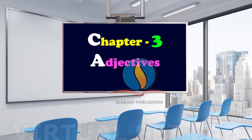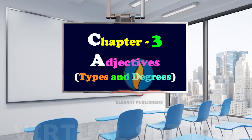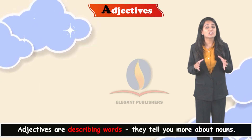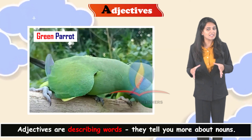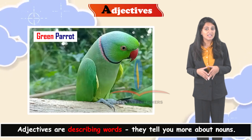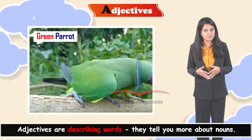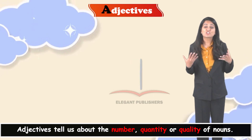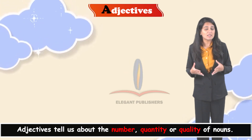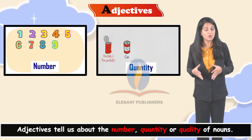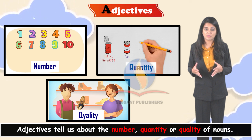Chapter Number 3: Adjectives — Types and Degrees. You already know adjectives are describing words. They tell you more about nouns. Adjectives tell us about the number, quantity, or quality of nouns.